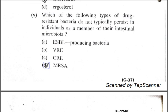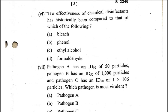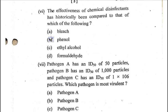Part six: The effectiveness of chemical disinfectants has historically been compared to that of which of the following? A) bleach, B) phenol, C) ethyl alcohol, D) formaldehyde. The correct option is B, phenol. Phenol is used in a method called the phenol coefficient method, in which the effectiveness of a chemical disinfectant is determined.